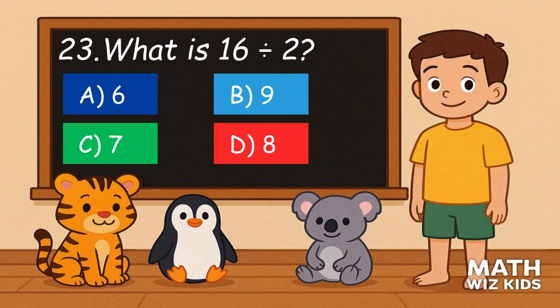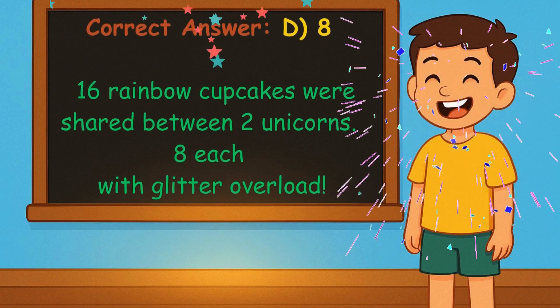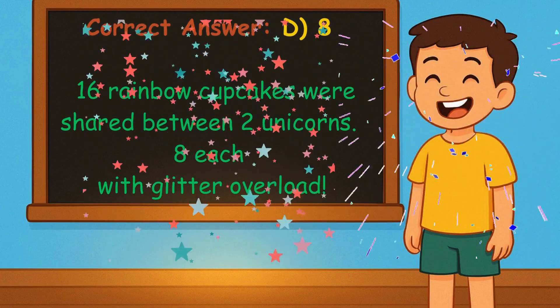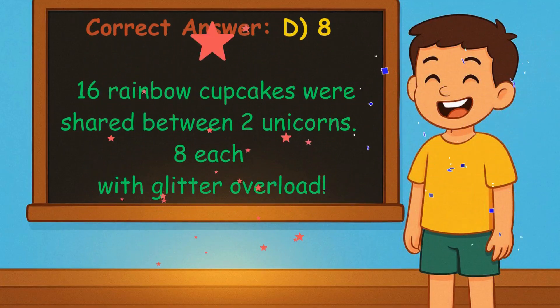23. What is 16 divided by 2? Is it A, 6, B, 9, C, 7, or D, 8? Correct answer is 8. 16 rainbow cupcakes were shared between 2 unicorns. 8 each with glitter overload.